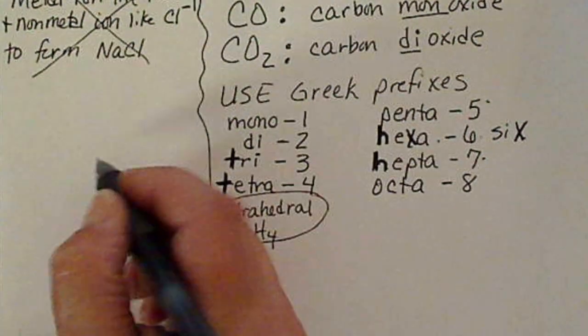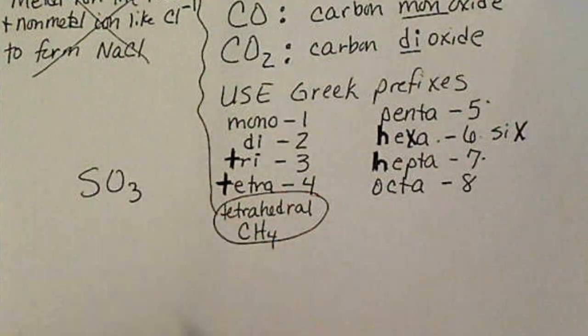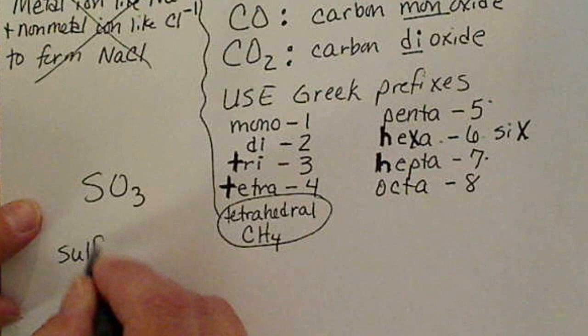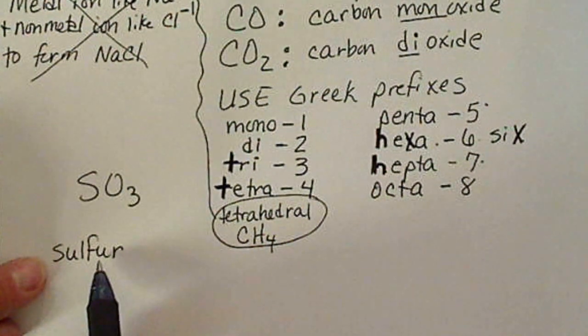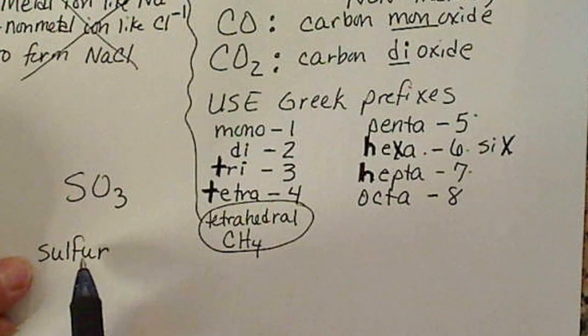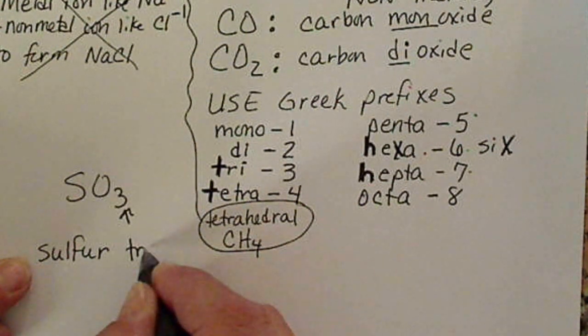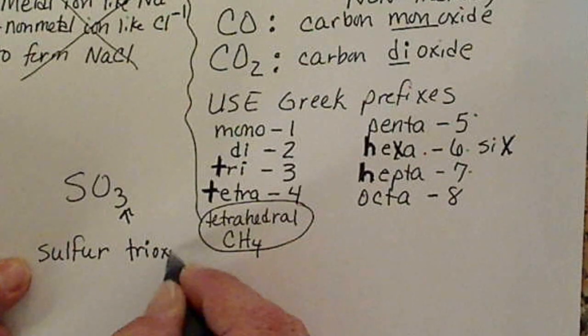For example, if we were going to name SO3, there's one sulfur, so we don't say monosulfur. We say the entire name of the first atom. So this is sulfur, and because there are three oxygens, we say trioxide.